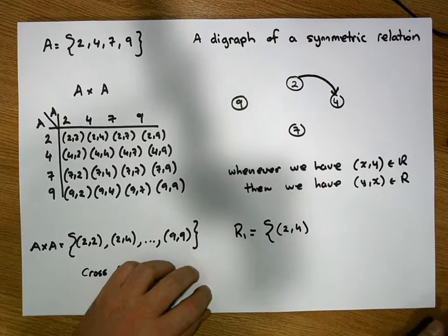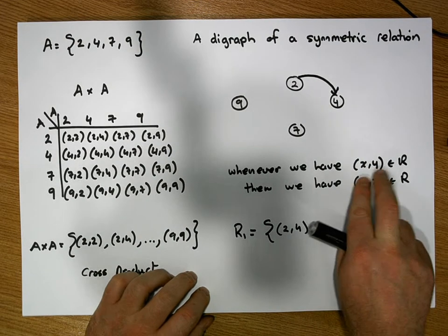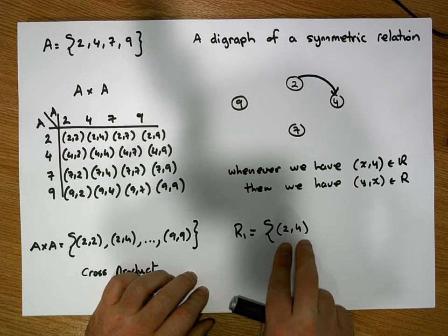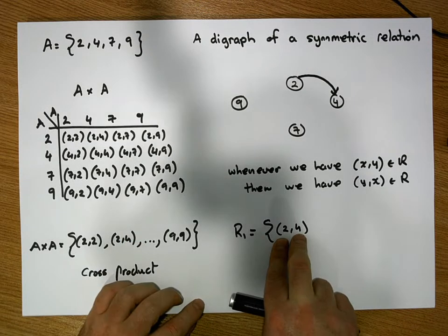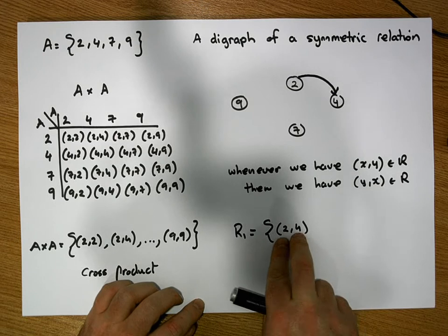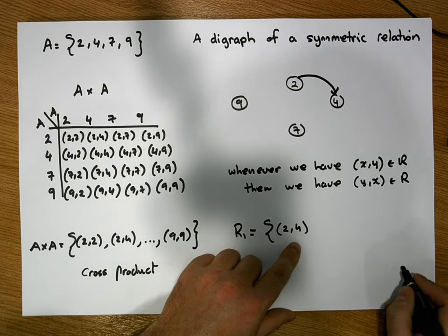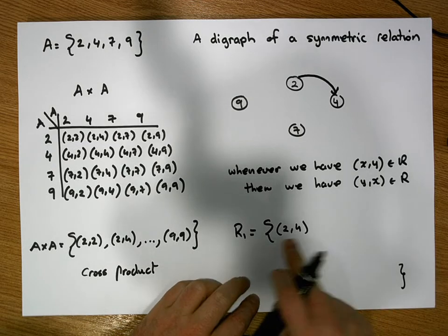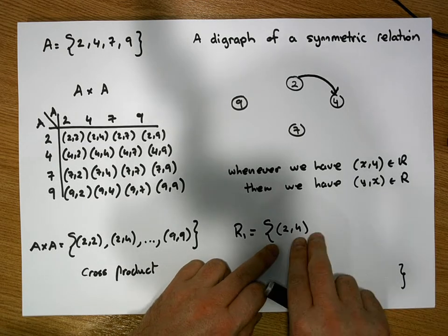Now the question is, is this relation symmetric? Well, for it to be symmetric, whenever we have an ordered pair in R, in this case we have (2,4), for it to be symmetric we would expect to have (y,x), or we'd expect to have (4,2).